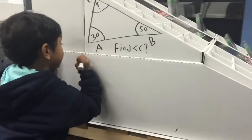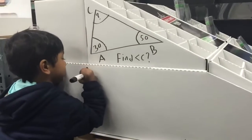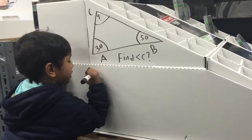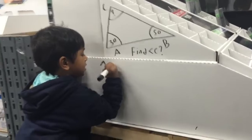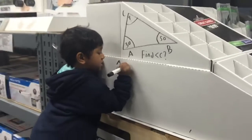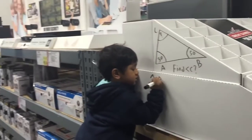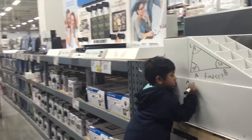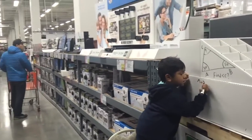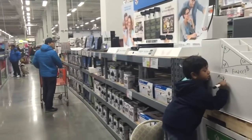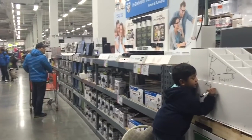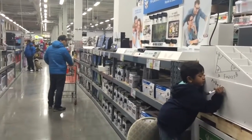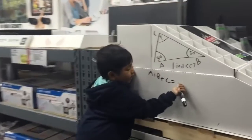A is 30, B is 50. But we don't know about C. You need to find C. We did add A and B, so let's add A, B, with C.